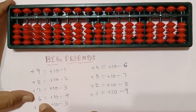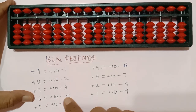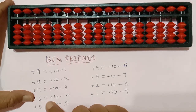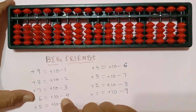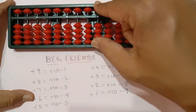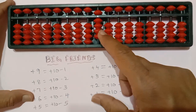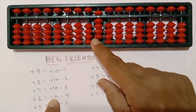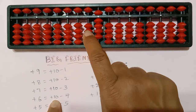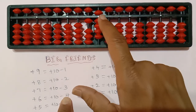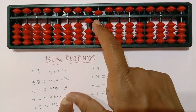Now add 6. It becomes add 10 minus 4. The big friend of 6 is plus 10 minus 4. Plus 10 minus 4 means 6 only. So 9 plus 6 — what we have to do? We have to add here 10 and we have to minus 4. So it becomes 15 now.